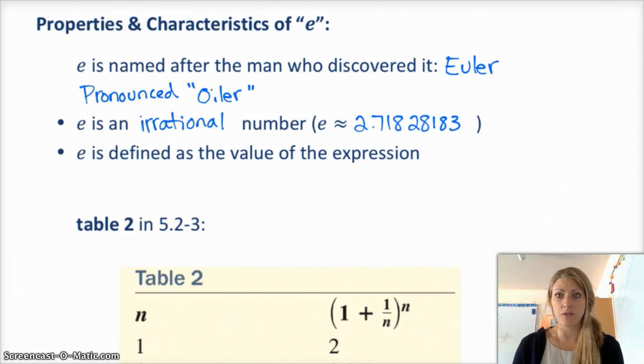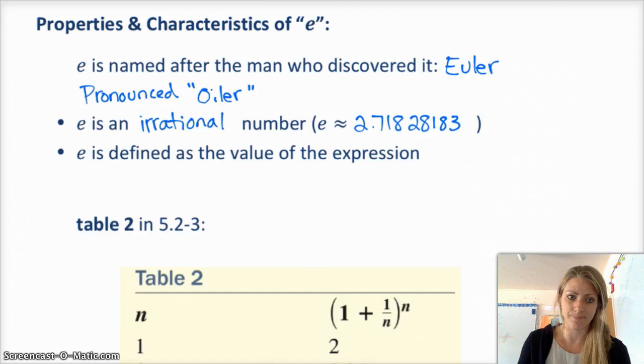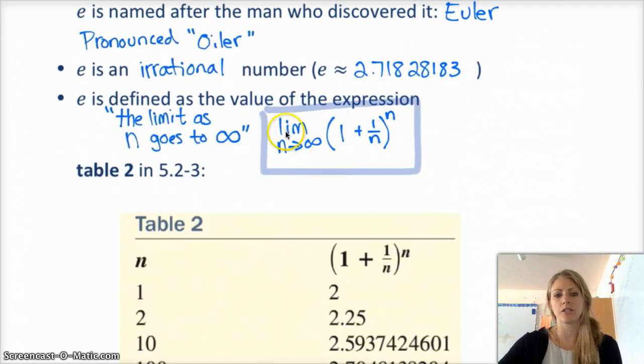So, e is an irrational number, and it's approximately 2.718, which we've already covered. And I'm going to introduce something totally new to you, probably. E is defined as the value of the following expression. This notation just means the limit as n goes to infinity of 1 plus 1 over n to the n, and basically all that means is, as n gets bigger and bigger and bigger, this thing here, this value, gets closer and closer to e.